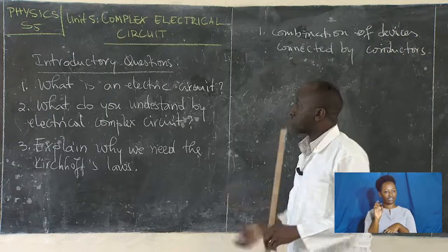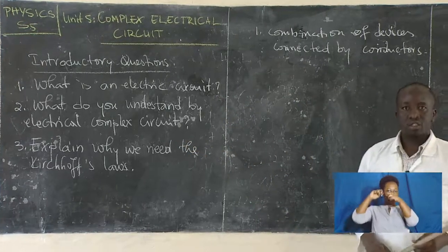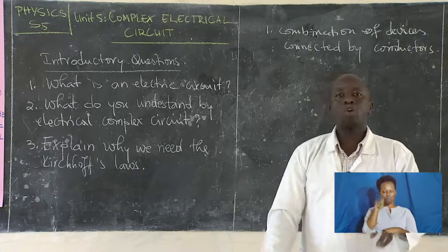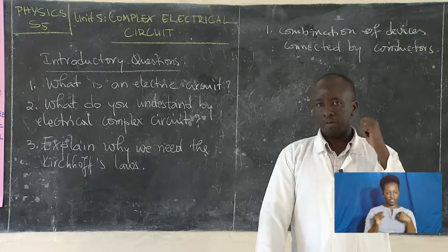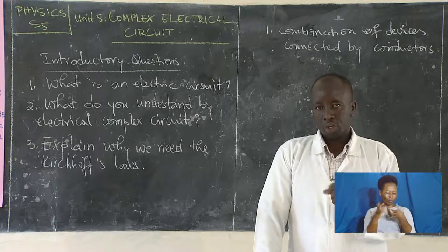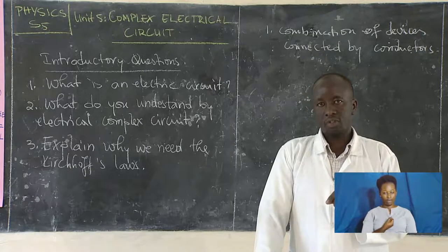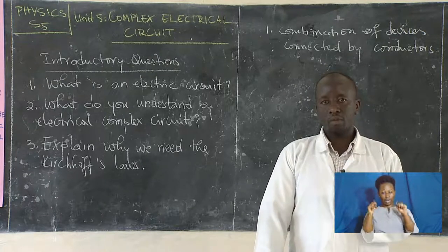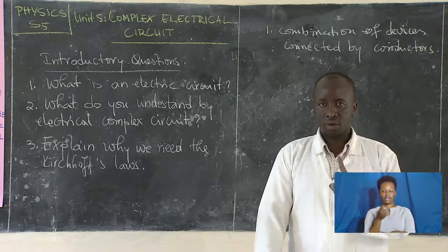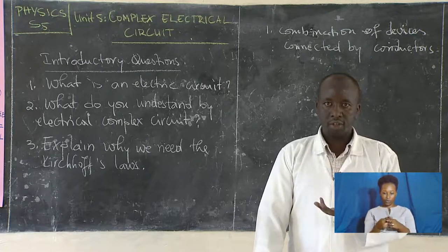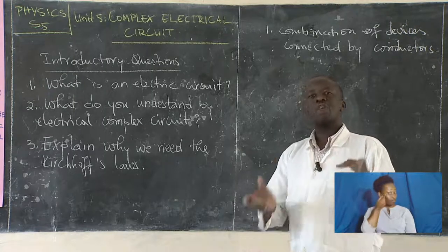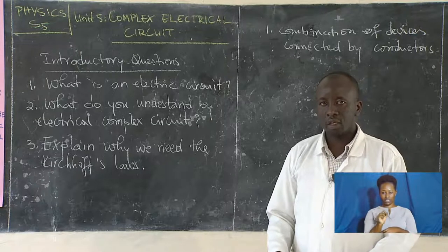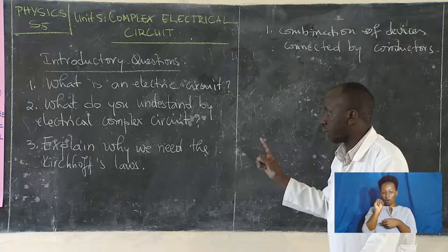Question number two: what do you understand by a complex electrical circuit? To answer this question you have to recall how the devices from question one are connected. If you have resistors connected in parallel and in series and you are able to simplify the circuit diagram to remain with one resistor, that circuit diagram is what we call a simple circuit. If it is not possible to reduce the connection to a single resistor, then we have what we call a complex circuit.